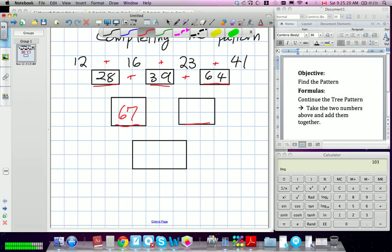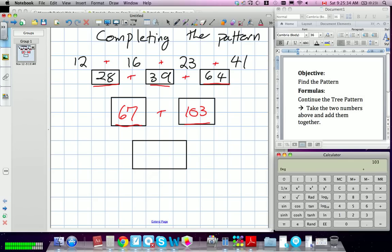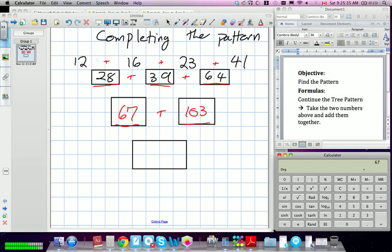Okay. What would be our last step to find out this final large number? If you add it, why would it be 67? Yeah. That's right. We need to add these two numbers together. Okay. So we have our 103 plus our 67, 170.